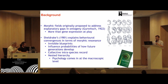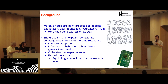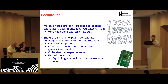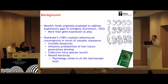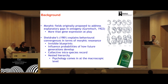Sheldrake built upon Gerwitz's initial ideas, suggesting this effect occurs by resonance, in turn producing what he refers to as invisible blueprints. These blueprints influence the probabilities or weightings by which certain outcomes occur and produce some kind of collective intraspecies record. He suggests these exist in nested hierarchies, ranging from the microscopic at the cellular level through to the macroscopic, to explain psychological effects, which is what I'm interested in talking about here today.